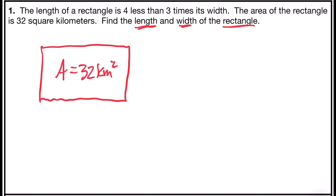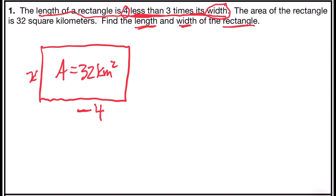The problem says the length of a rectangle is four less than three times its width. I'm going to call the width x and write an expression for the length. It says four less than — less than means subtraction, and the word 'than' switches the order. So four is written first in words but second in symbols, and three times the width is written second in words but first in symbols, so the expression for the length is 3x minus 4.